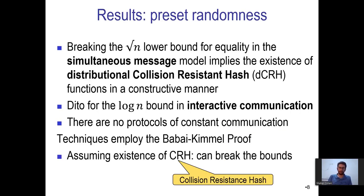In the preset randomness model, we show that breaking the known lower bound implies the existence of DCRH — distributional collision resistant hash functions — where only random collisions are guaranteed to be hard to find. We show explicitly how such a protocol can be used to construct a DCRH function. That is for the simultaneous messages model.